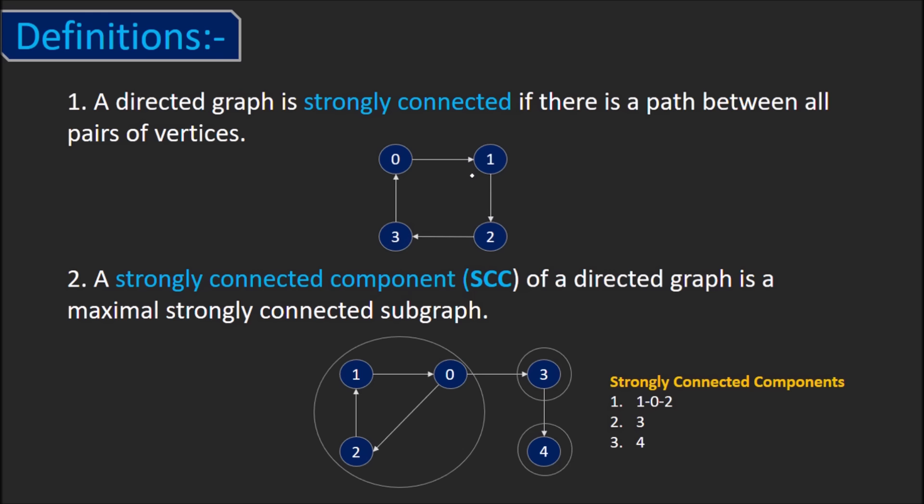The second definition says that an SCC of a graph is a maximal strongly connected subgraph. Let's look at this graph. Now, if we pick any two out of the vertices 0, 1 and 2, there is a path between each. So, this is one strongly connected component.